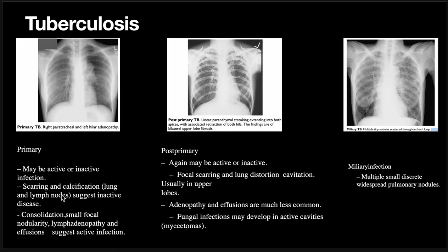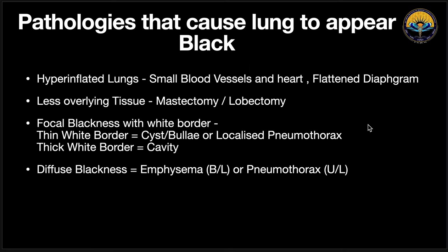Coming to post-primary TB: lymphadenopathy and effusion are less commonly seen. The main characteristic features are cavitation and scarring — lung distortion and cavitation usually in the upper lobes only. Primary TB is mainly seen in the middle and lower lobes, whereas post-primary or secondary TB is seen mostly in the upper lobes. Linear parenchymal fibrotic bands with retracted hilum and cavitation would suggest post-primary secondary TB. In miliary infection, there are multiple small discrete nodules widely spread — this is miliary TB.